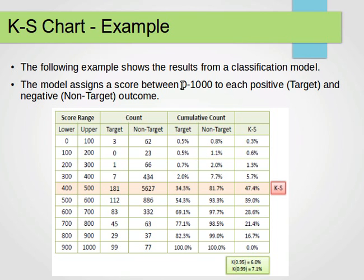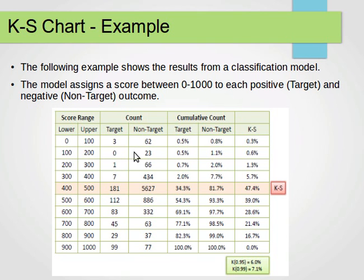The model assigns a score between 0 and 1000 to each positive or negative outcome — each target and non-target outcome. Looking at the table, the score range is split over 10 intervals: 0–100, 100–200, 200–300, and so on up to 900–1000. We have counts for both positive and negative in each range. For example, between 0 and 100 we have 3 positive and 62 negative; between 100 and 200 we have 0 positive and 23 non-positive, and so on across all score ranges.